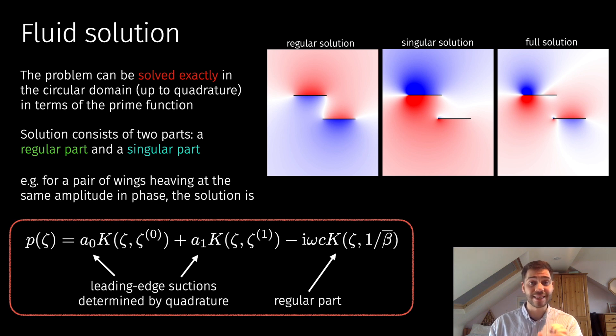I'm not actually telling you the solution here because it requires some things like integral transforms and it's not super simple to write down. There are some special cases that are very straightforward to write down, as I've illustrated in this red box. This is the pressure field in the circular domain for a pair of wings that are heaving in phase at the same amplitude. You can see the solution is written explicitly in terms of this k function. All that is unknown are these coefficients a0 and a1, and those are the leading edge suctions that need to be determined by quadrature.